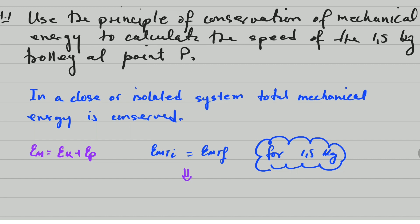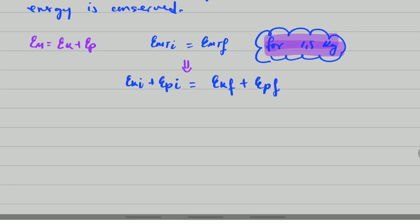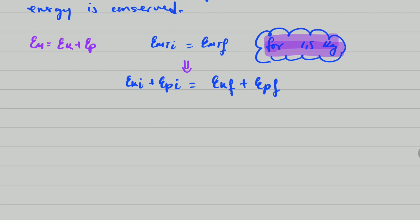For the 1.5 kg trolley: kinetic energy initial plus potential energy initial equals kinetic energy final plus potential energy final. Recall that kinetic energy equals half times mass times speed squared, and gravitational potential energy equals mass times g times height. We substitute all these into the equation.